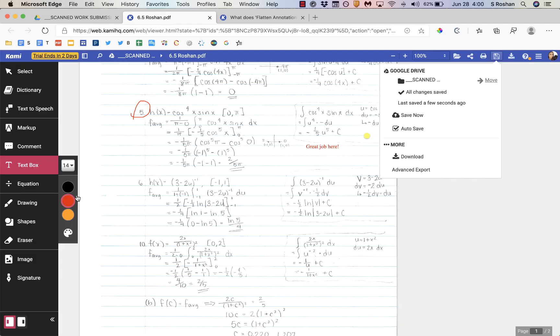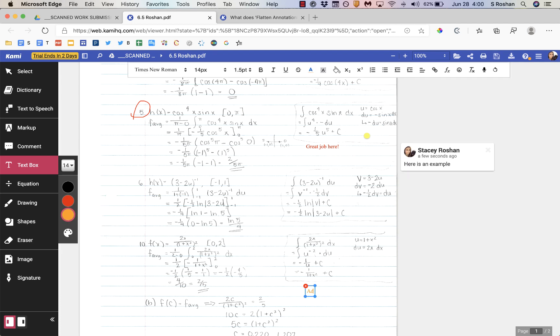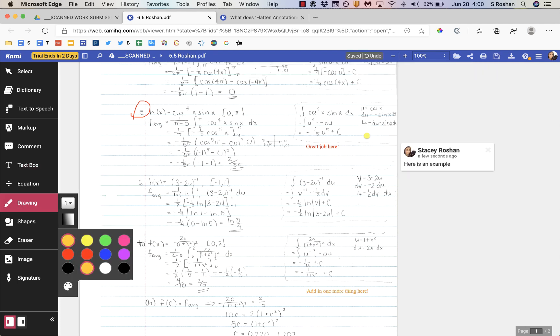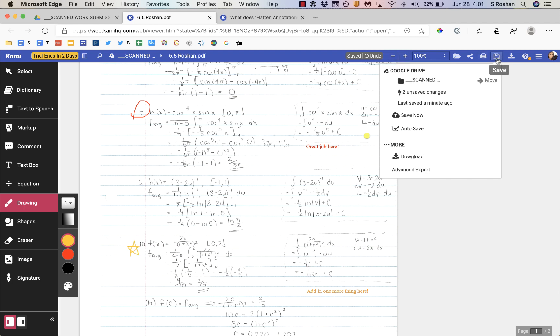Let me just show you that the live update works. So say that I want to add one more thing in. Go back and save. I know that it auto-saves, but I always have to press save now.